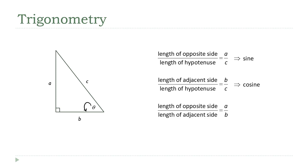All right, so we've got one more that we're going to talk about, where we're going to talk about the length of the opposite side divided by the length of the adjacent side. That's going to be a over b. And our name for that is going to be the tangent.